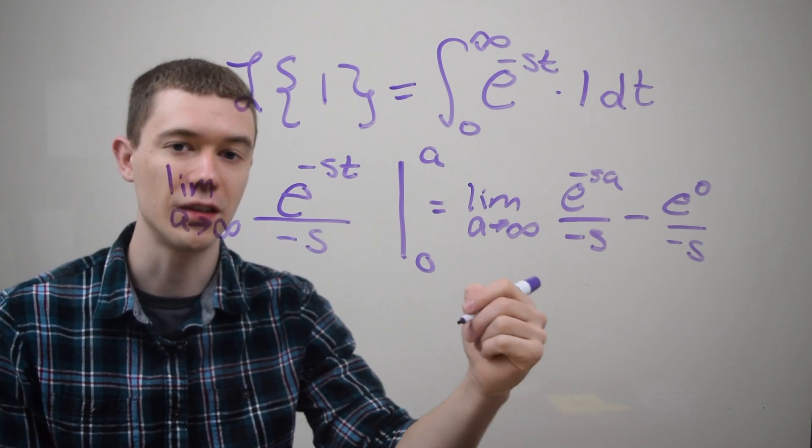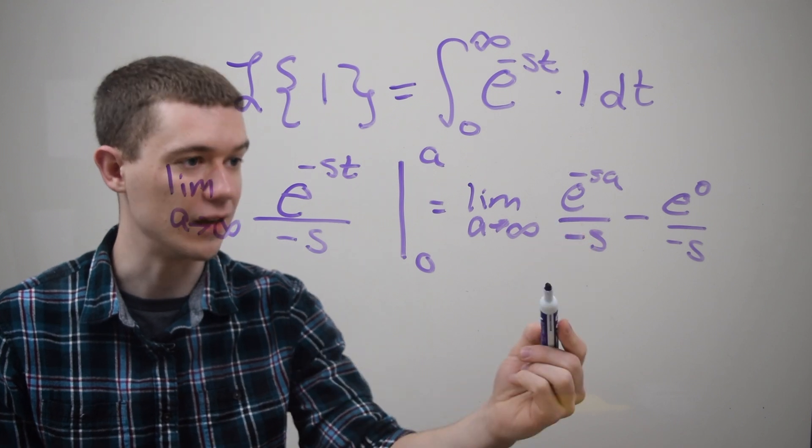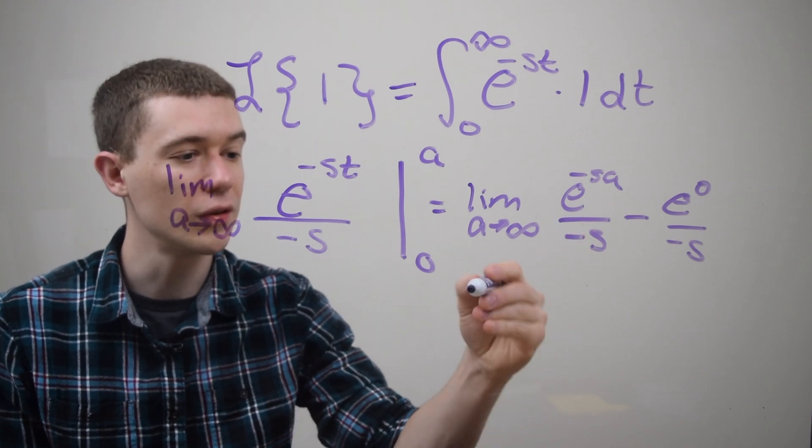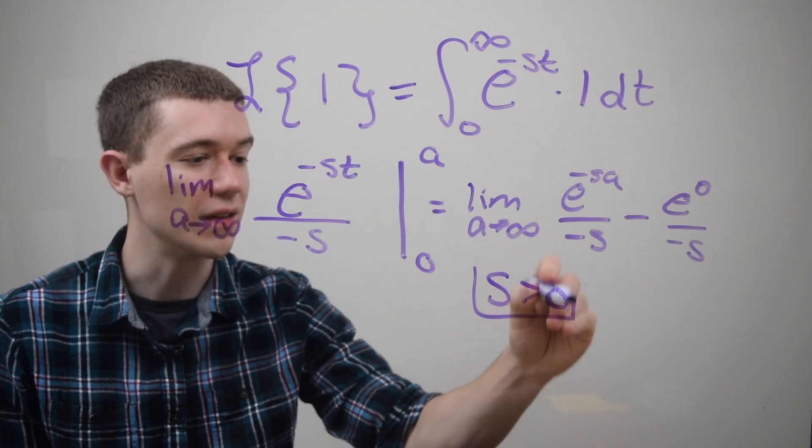Well how do I know that that's going to happen? Well I need this to be like e to the minus infinity. That's only going to happen if s is positive, so I have to make this restriction.